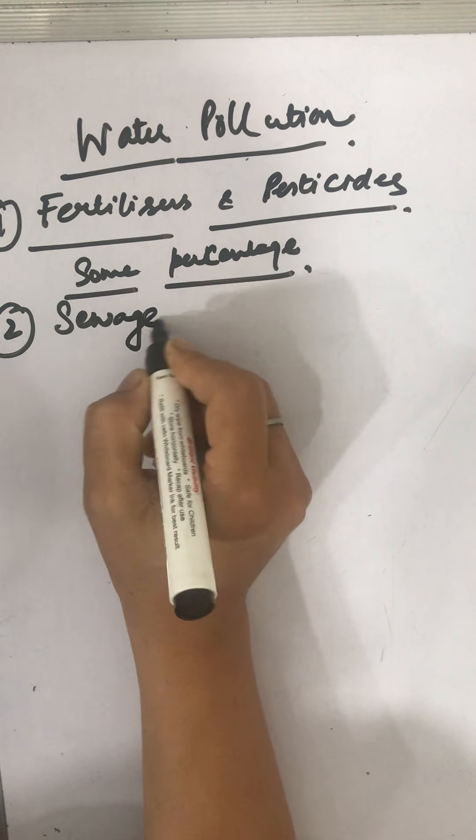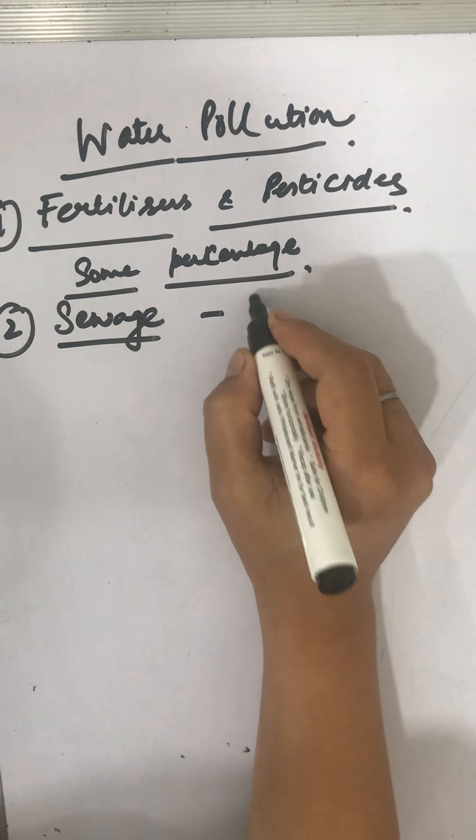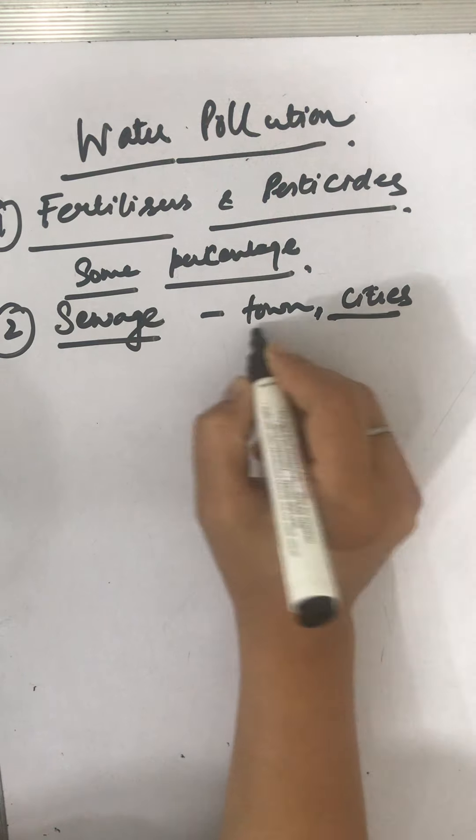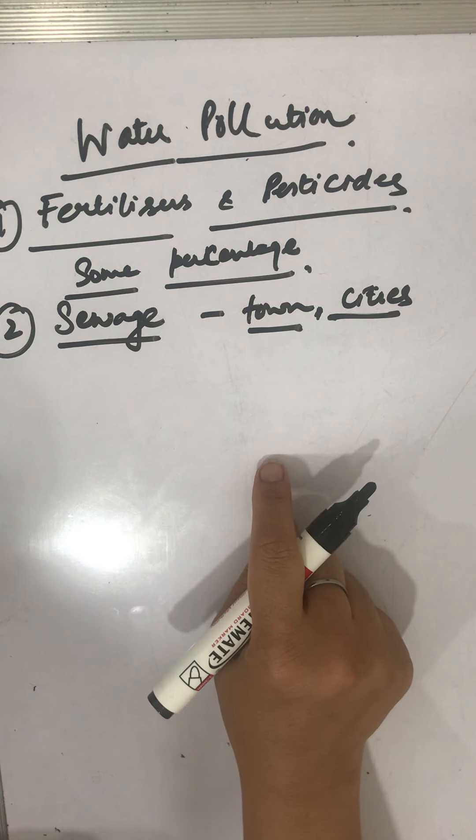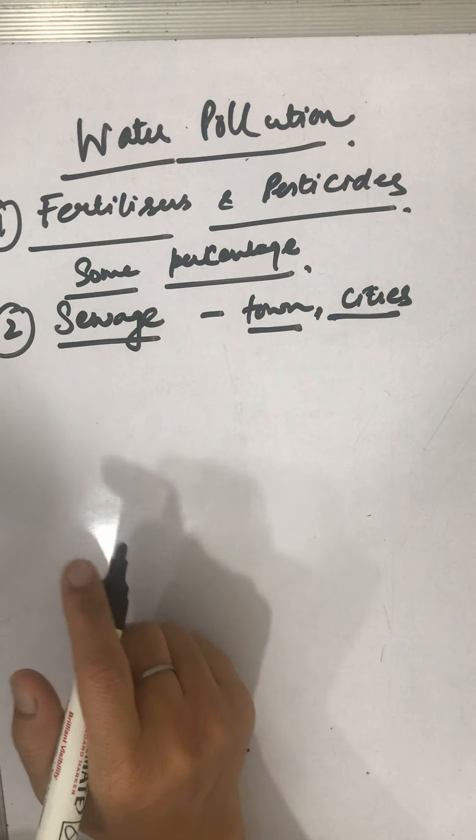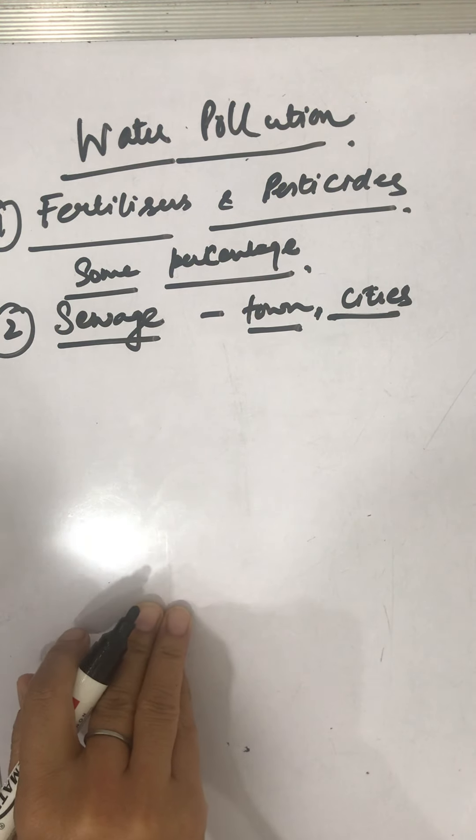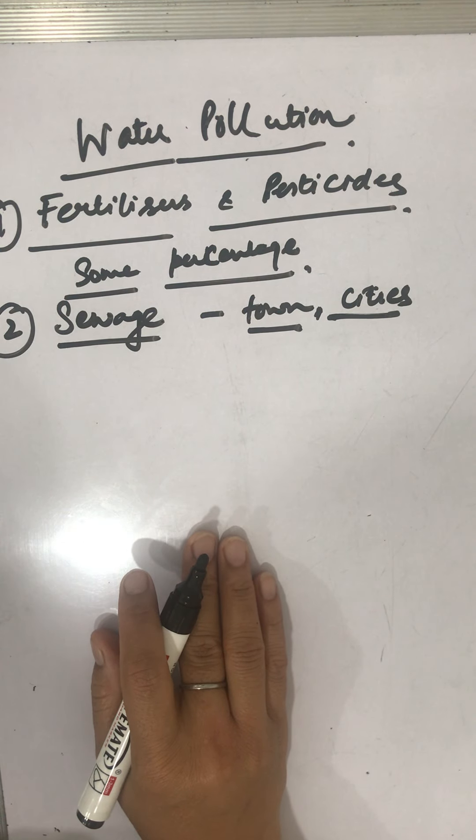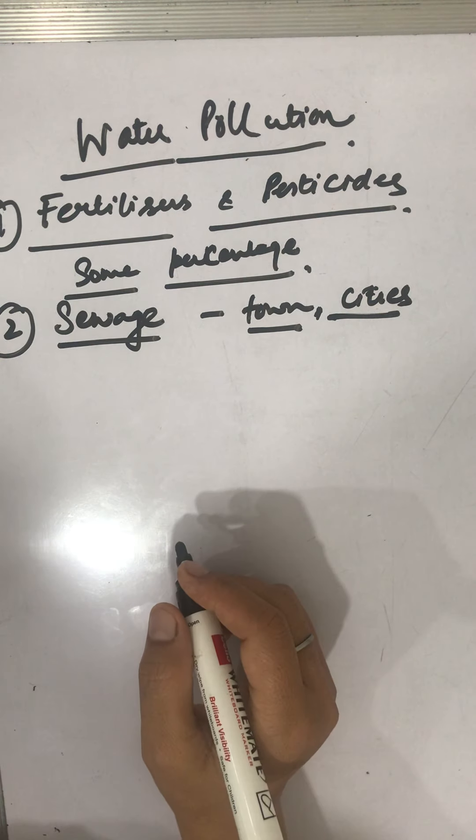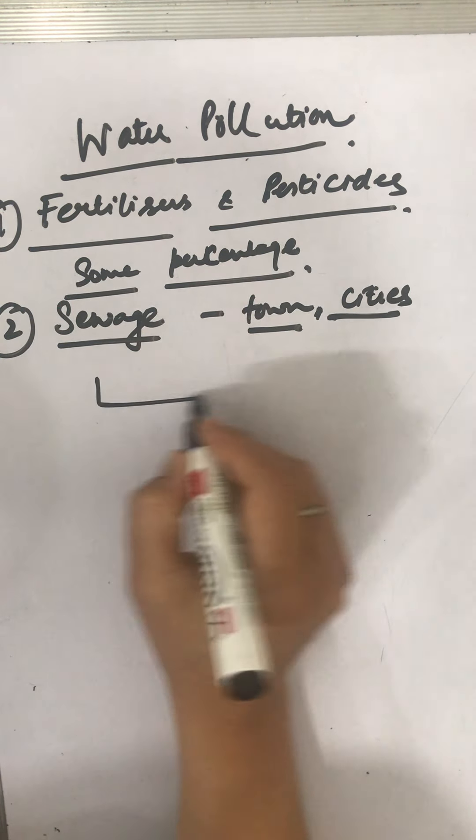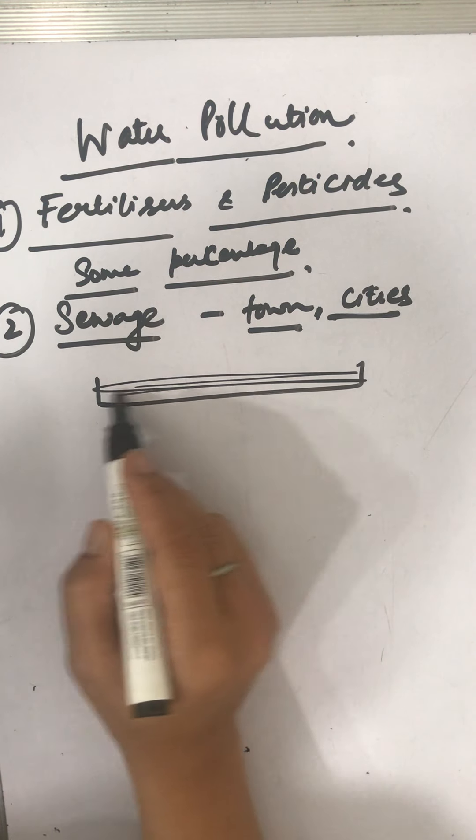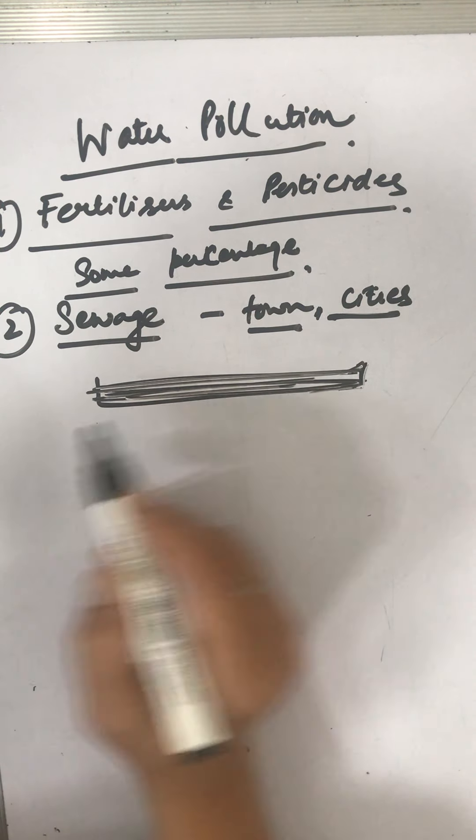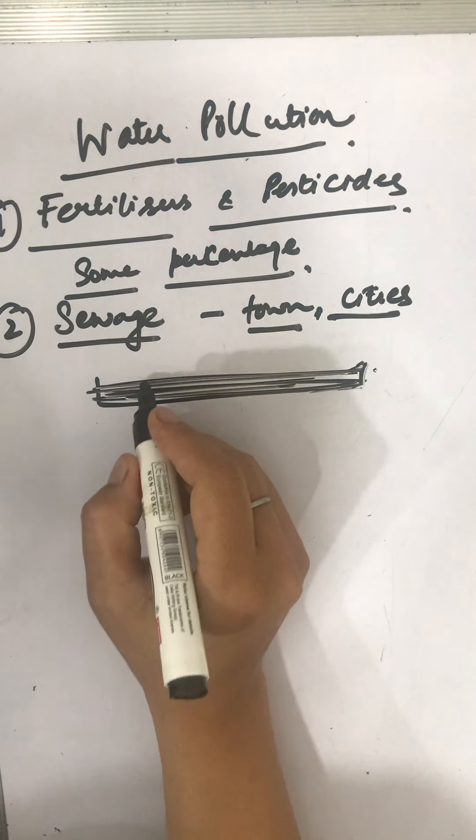Then second is the sewage from our homes, our towns and cities, and factories everywhere. It is dumped into rivers and lakes. Specific industries also use water for cooling for various operations, and ultimately they return hot water into the water bodies. When this temperature range is changed, then the level of the water is affected along with the flora and fauna in the underground zone of that water resource. That is also affected.